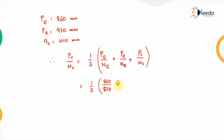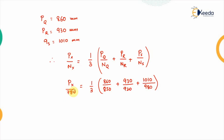Substituting all values: PQ is 860 mm and NQ is 850 mm; PR is 930 mm and NR is 920 mm; PS is 1010 mm and NS is 980 mm. This equals PX divided by NX, where NX equals 780 mm. Now we solve for PX, the precipitation at station P.